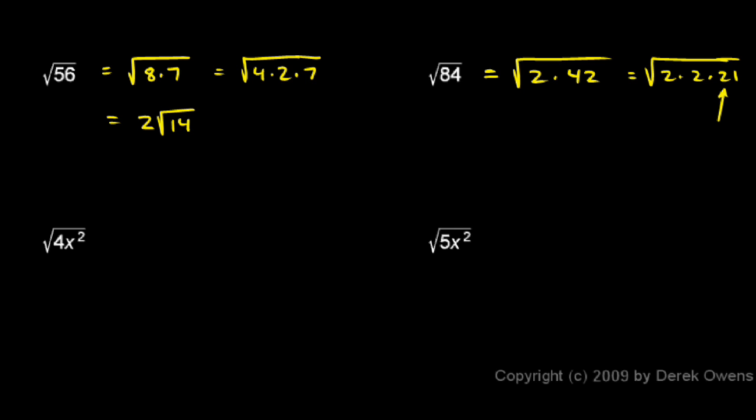Now, the 21 can be factored into 7 times 3, but that doesn't help me. There's no perfect squares. My only perfect squares are right here. This 2 times 2 is a 2 squared. So those will come out from under the radical. And instead of having two 2s under the radical, a 2 squared, I'll just have a 2 outside the radical. So this is 2 times the square root of 21.